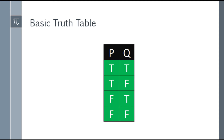So for P and Q, the first row: P is true and Q is true. Second row: P is true and Q is false. Third row: P is false and Q is true. And lastly, the fourth row is both false.